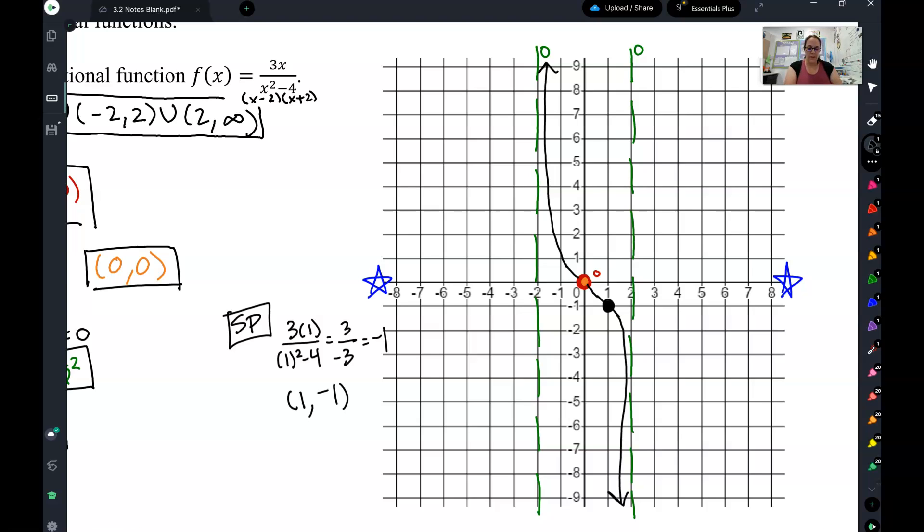Now if I look at this asymptote, this is an odd asymptote. I know odd asymptotes need to face opposite directions on either side. So since this side is down, this side has to be up, and there's nothing between that and my star, so curve around and point at my star.